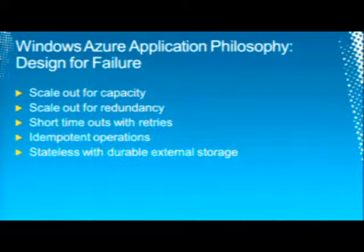The philosophy for the Windows Azure operating system and any application written to it is the traditional cloud philosophy: we scale out for capacity — not scale up — we scale out for redundancy rather than doing mirroring for high availability. We have short timeouts with retries, assuming there will be failures on any network communication. Because we assume failures, any operations should be idempotent, since you never know if somebody already performed the operation when you retry. And individual nodes are actually stateless — they externalize all their state to some external durable storage.